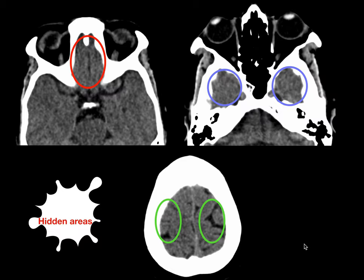Coming to hidden areas, which is the most important thing in trauma cases — there are three common blind spots usually overlooked while scrolling brain sections: the basifrontal lobes, the basitemporal regions, and the high frontoparietal convexities. Any EDH, SDH, or small hemorrhagic contusions in these regions are usually overlooked.